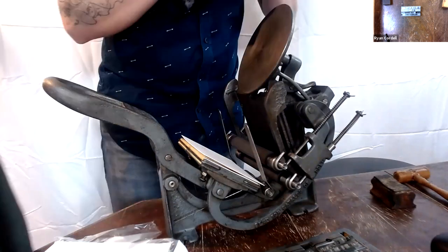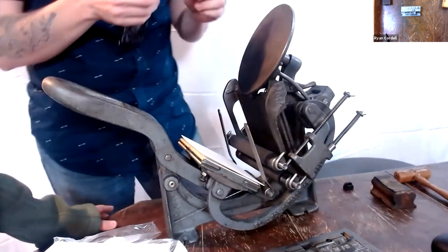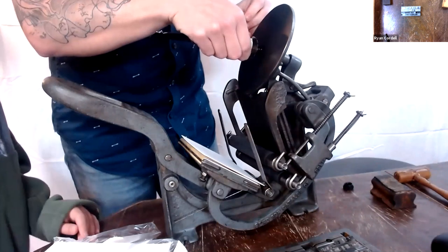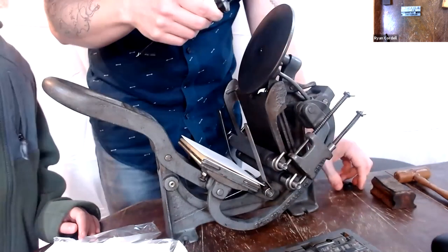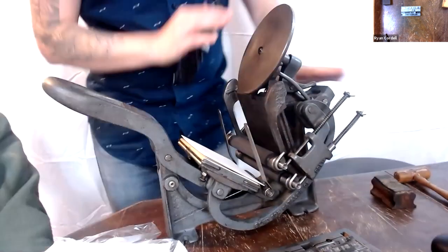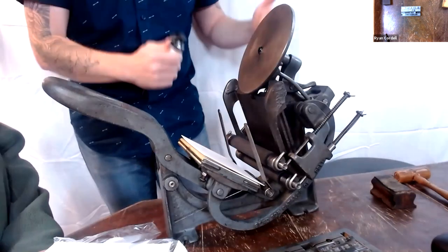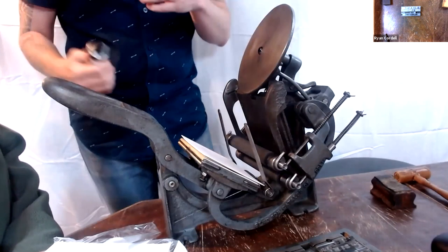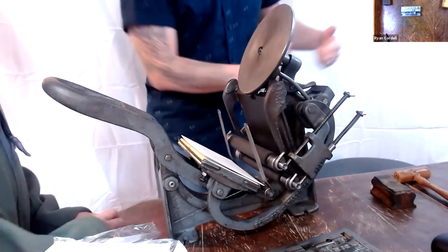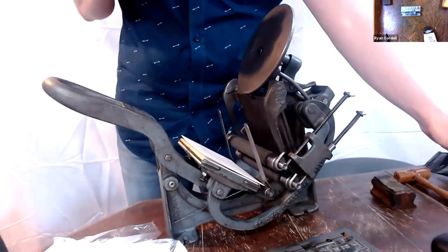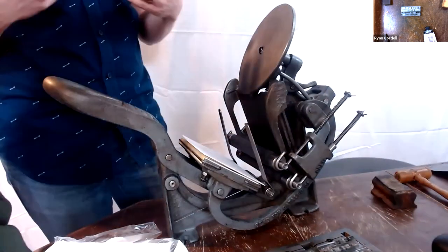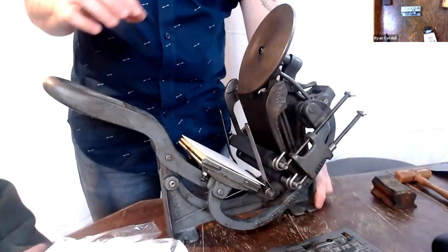So in the sort of print shop through essentially the 18th century, when you were using like an English common press or things that are sort of derived from Gutenberg's press, operating a press was, you know, a three or four person operation. You had one person who would put the paper down. You had one person who would ink the type. The type sat in a flat bed and you would ink it with these balls covered in ink. You'd pat the ink down. Another person would put the paper in. You would slide the text under the press and then someone would pull that big lever that you saw in the Stephen Fry video to exert pressure.